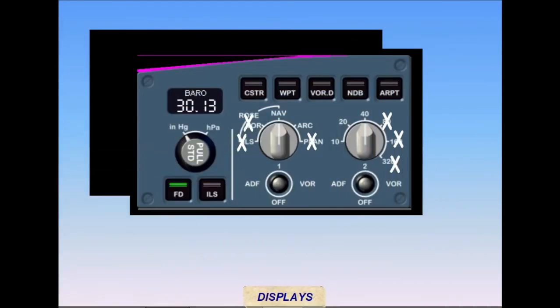TCAS symbols are shown on the NAV display only when NAV or ARC mode is selected. For older aircraft, the range selection must be 40 miles or less to display TCAS symbols. Newer aircraft have been modified to allow TCAS display at all range selections. Consult the flight manual for more information on aircraft numbers.